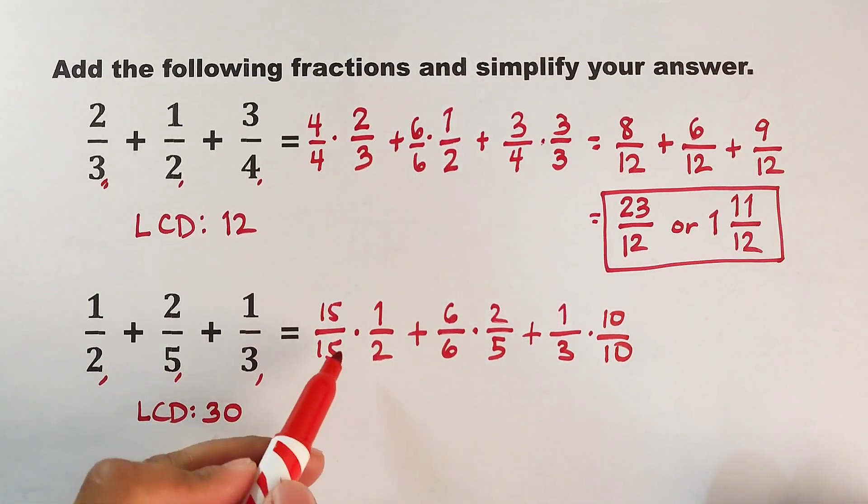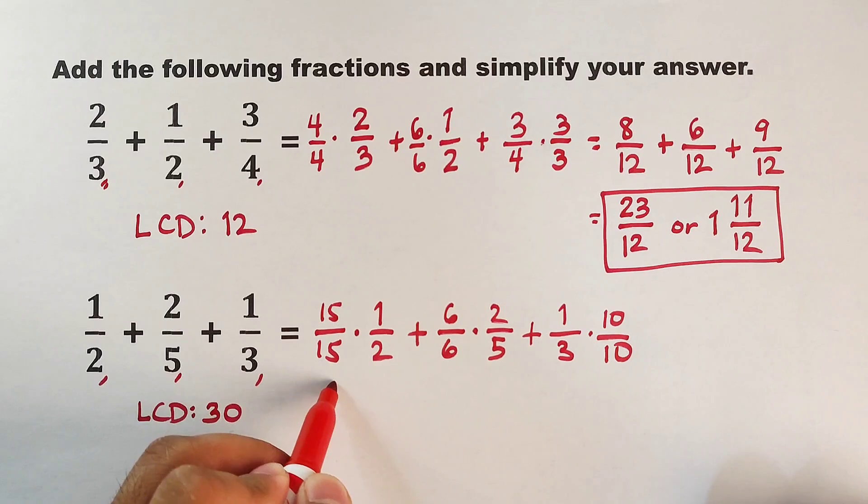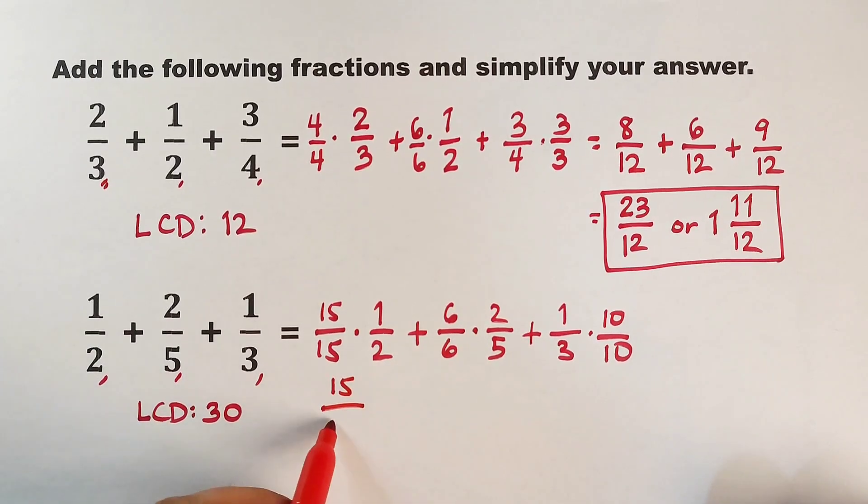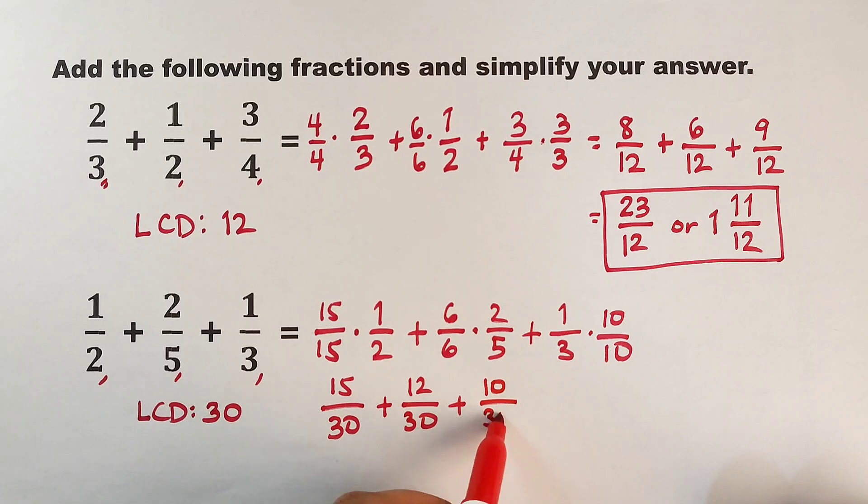Let's continue our solution here. 15 times 1, that is 15 over 30. Plus 6 times 2, which is 12 over 30. Plus 1 times 10, that would be 10 over 30.